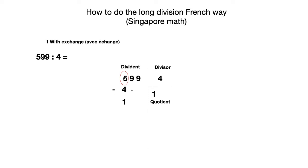We're going to slide down the 9, but this time we don't have just 9 — we have 19. So in 19, how many times 4? It's 4. 4 times 4 equals 16, and 19 minus 16 is 3. So we completed the second step.